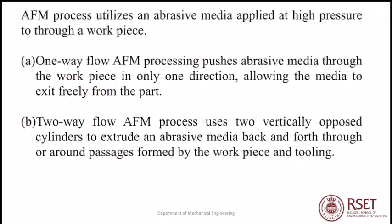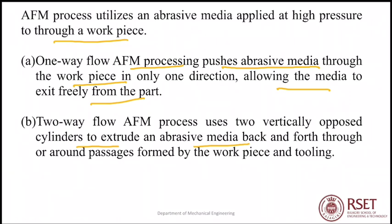AFM utilizes an abrasive medium applied at high pressure through a workpiece. One-way flow AFM pushes abrasive medium through the workpiece in only one direction, allowing the medium to exit freely. The two-way flow AFM process uses two vertically opposing cylinders to extrude an abrasive medium back and forth through passages formed by the workpiece — this is the type shown in the earlier video.